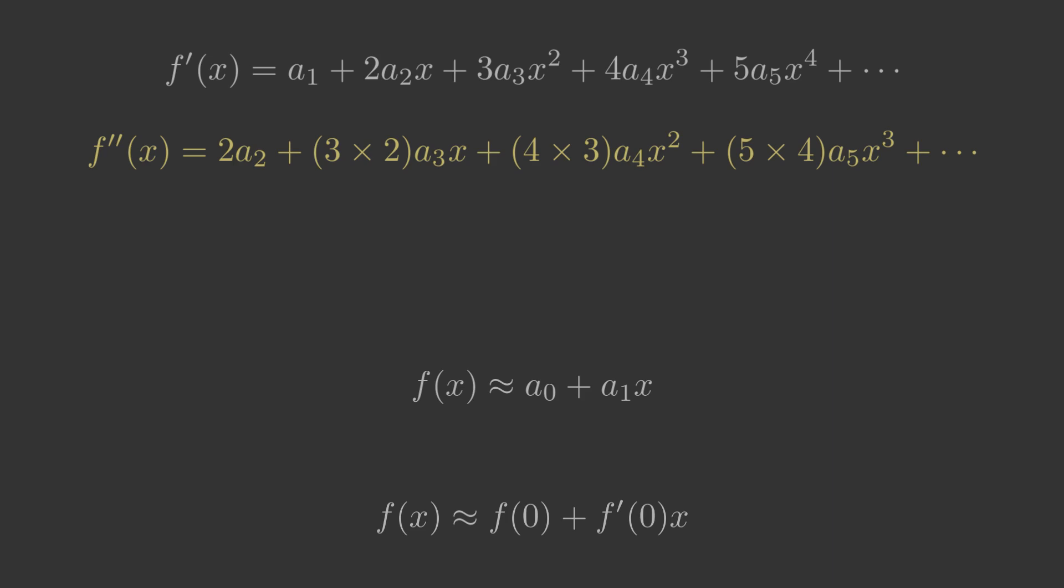Again we set x to 0, and this time we have f prime prime 0 equals 2a2, so a2 is f prime prime 0 over 2.